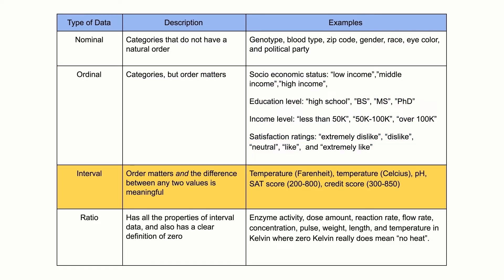Third, interval data, which has order and the differences between any two values is meaningful. Examples of interval variables include temperature in Fahrenheit, temperature in Celsius, pH, SAT score, and credit score.